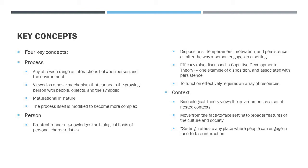Process. What is process? Process refers to any of a wide range of interactions between a person and the environment. These are viewed as basic mechanisms that connect the growing person with people, objects, and symbolic representations in their environment. Much like the CHAT focus discussed in Cognitive Social Historical Theory, these processes are considered activity-based and maturational in nature. The person becomes engaged in the process in new ways, and the process itself is modified to become more complex.